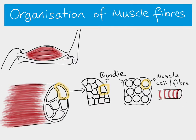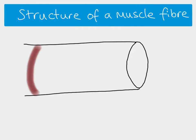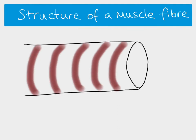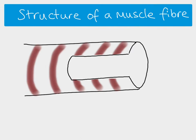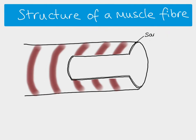You can see stripes on the muscle fiber — these are the striations, and they're there because of the protein filaments inside the muscle fiber. Looking at the muscle fiber in more detail, we can cut away a section to see inside the cell. The outside line represents the cell surface membrane, which in muscle has a particular name: the sarcolemma.